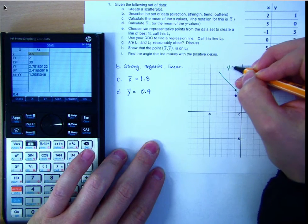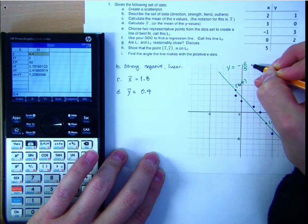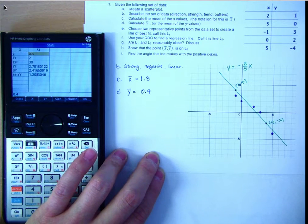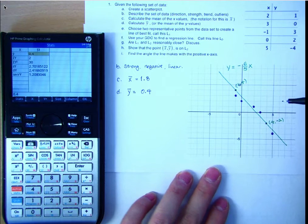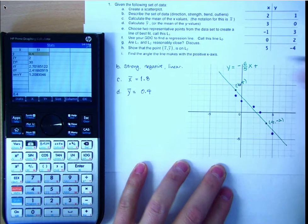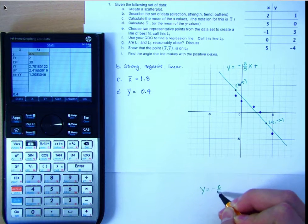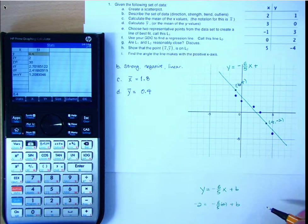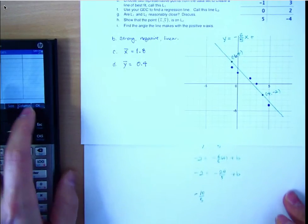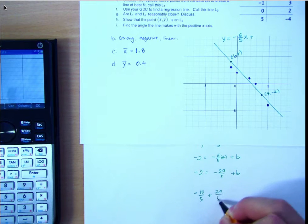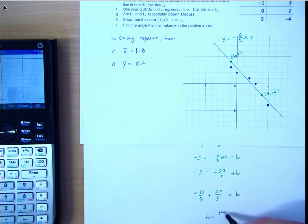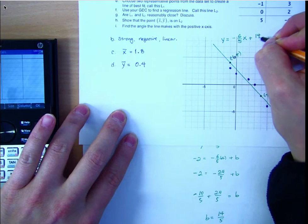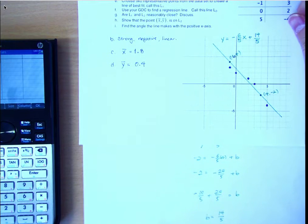So y equals negative 6 fifths x. And you're going to trust yourself on that? No, I can't. It's not going through a nice clear intersection, so I have to solve for b. So if we insert either of those green points that we've generated, let's take negative 2 and replace it for the y-value and 4, replace it for the x-value. So common denominator, and piece it all together. So 14 over 5. Brilliant. So this is our line of best fit. It's pretty good.